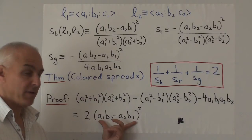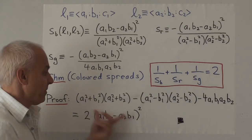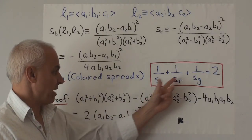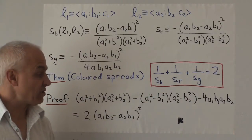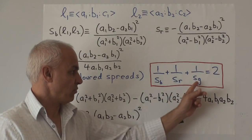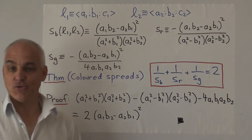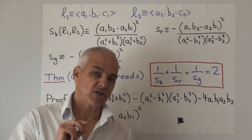And so if you divide both sides by this term right here, then this over that becomes one over the blue spread, this over that with the minus sign becomes plus one over the red spread, and this over that with that minus sign becomes plus one over the green spread, and on the right hand side we get two.